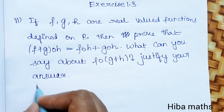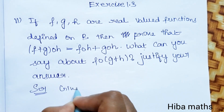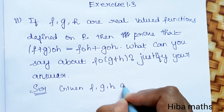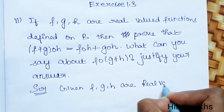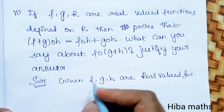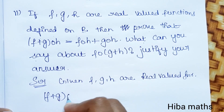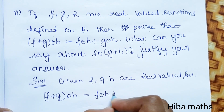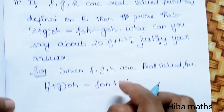So given, f, g, h are real valued functions. Now, what we need to prove is: (f+g) of h is equal to f of h plus g of h.